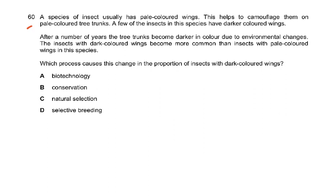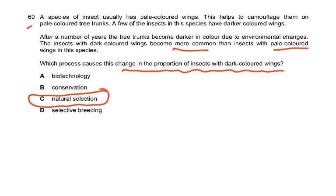Question 60: a species of insects usually has pale-colored wings for camouflage on pale tree trunks. After tree trunks darken due to environmental changes, insects with dark-colored wings become more common. The process causing this change is natural selection. Biotechnology involves enhancing properties artificially; conservation involves protecting endangered species; selective breeding is artificial selection for human benefit, such as fungus-resistant wheat or high-yielding rice. The answer is natural selection. That completes the difficult MCQs — thank you very much.